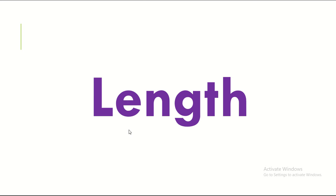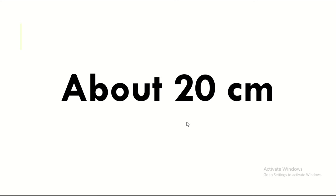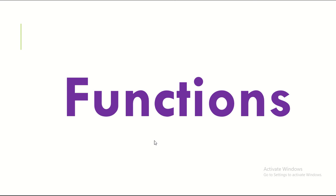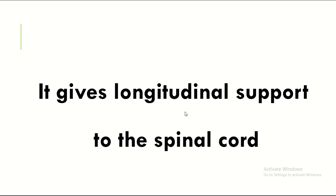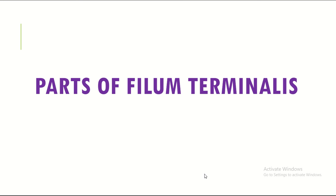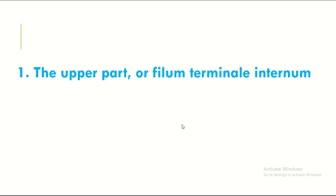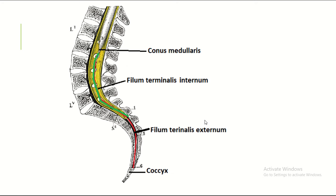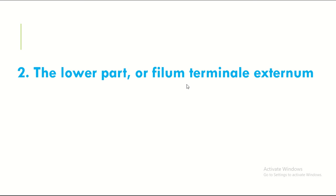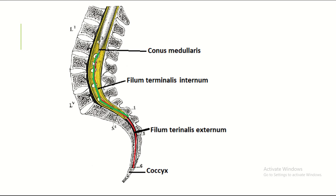The length of the filum terminale is about 20 centimeters. Its function is to keep longitudinal support to the spinal cord. The filum terminale has two parts: the upper part, filum terminale internum, and the lower part, filum terminale externum.